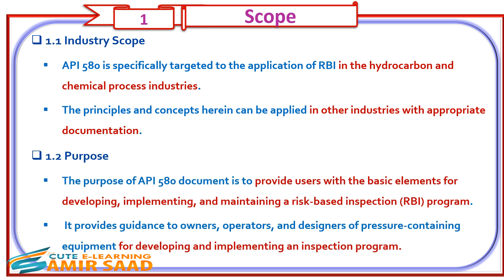1.2 Purpose. The purpose of the API 580 document is to provide users with the basic elements for developing, implementing, and maintaining a Risk-Based Inspection (RBI) program. It provides guidance to owners, operators, and designers of pressure-containing equipment for developing and implementing an inspection program.